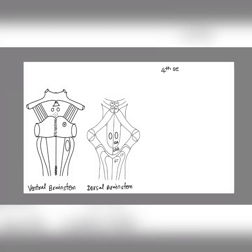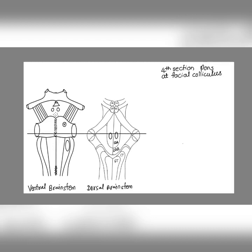Coming to the sections of the pons: the lower section, or the section passing through the lower part of the pons — ventrally it will cut the basilar sulcus, and dorsally it will pass through the facial colliculus. The facial colliculus is due to the motor fibers from the facial nerve nucleus winding around the abducent nucleus, so this is the facial colliculus seen on the dorsal aspect.